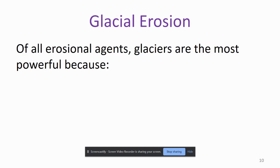Glacial erosion is going to be the most powerful of all the erosional agents we have talked about because of three things: glaciers have a great size, they have great weight, and they are very dense — their density is going to be another reason.